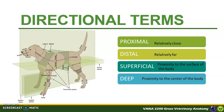Next, let us differentiate the terms proximal and distal. Proximal means relatively close to a given part, usually the axis of the body, while distal means farther from the axis of the body. For example, the head of the humerus is located at the proximal end, while the humeral condyles are present at the distal end of the humerus.